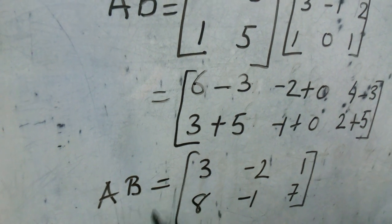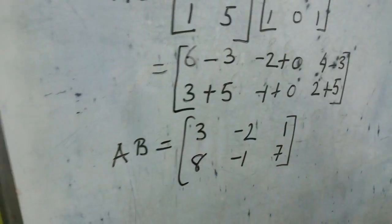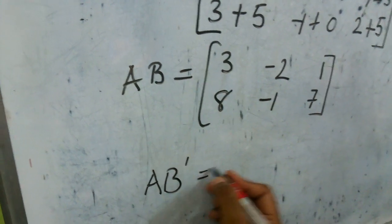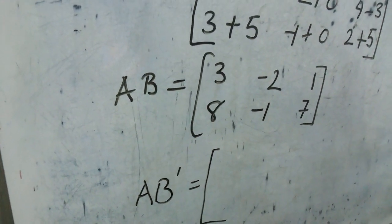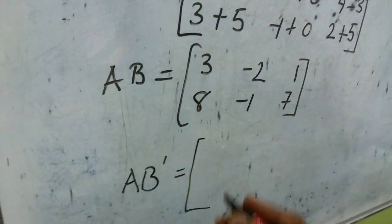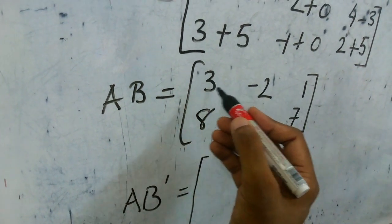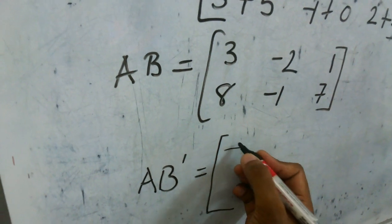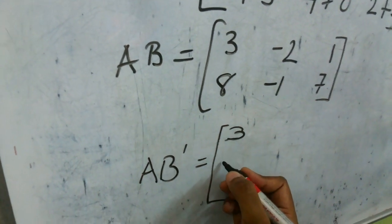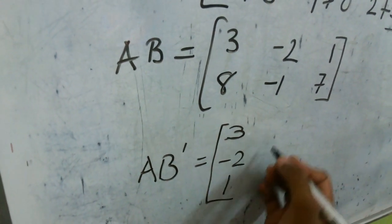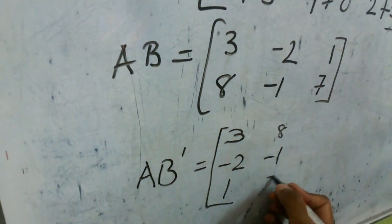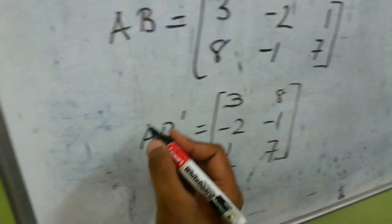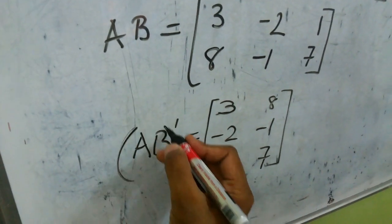As per the left hand side we need to find AB transpose. So we convert rows to columns. The elements of the first row are 3, -2, 1, which become the first column, and 8, -1, 7 become the second column. So AB transpose equals [3, 8; -2, -1; 1, 7]. This is the left hand side.